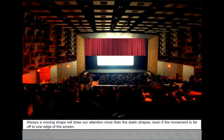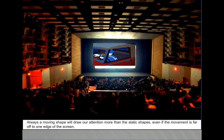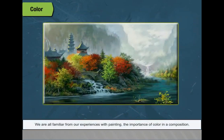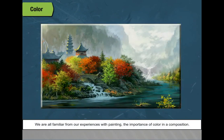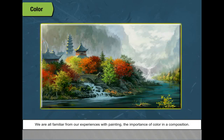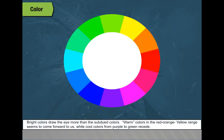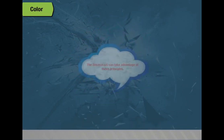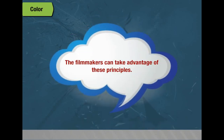Movement: a moving shape will always draw our attention more than static shapes, even if the movement is far off at the edge of the screen. Color: bright colors draw the eye more than subdued colors. Warm colors in the red, orange, and yellow range seem to come forward, while cool colors from purple to green recede. Filmmakers can take advantage of these principles.